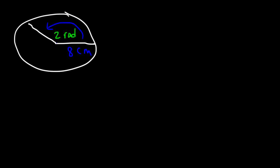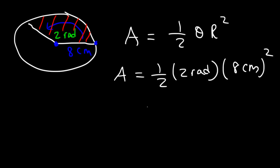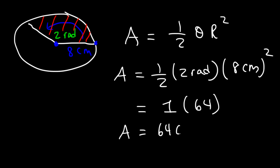Another example: the angle is 2 radians and the radius is 8 centimeters. Since the angle is in radians, use A = (1/2)θr²: (1/2) times 2 times 8². One-half times 2 equals 1, and 8² = 64, so the area of the sector is 64 square centimeters.